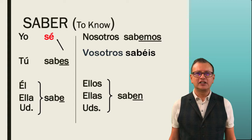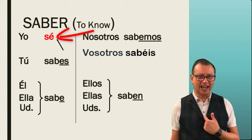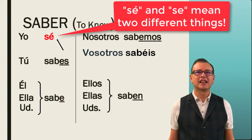The yo form follows absolutely no pattern. It's very important to stress that this one has an accent on the form: sé. Be careful because if you forget the accent it means something else. Let's take a look at the following verb.